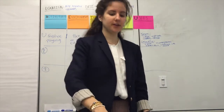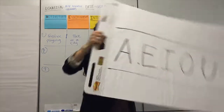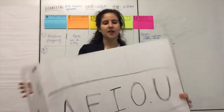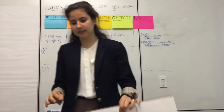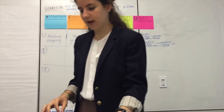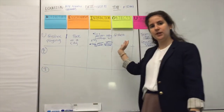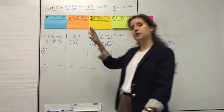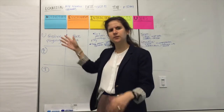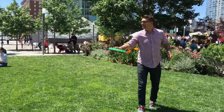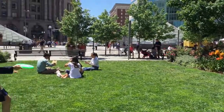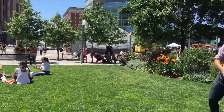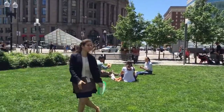This framework is called the AEIOU framework. The way it works is that you have a chart — like we have one over here — and you first notice the activities. What is going on? Today we went out and we observed two people playing frisbee. So frisbee playing is the activity that's going on.